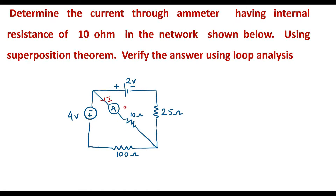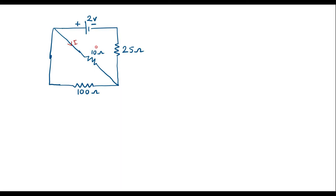In the first step I will consider the 2 volt source alone. In that case I will short circuit the 4 volt voltage source. The equivalent circuit looks like this. I will assume the current through this 10 ohm resistor considering only the 2 volt source to be I1. Now I will simplify and find I1 using loop analysis method.